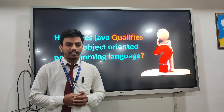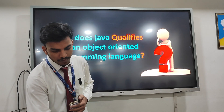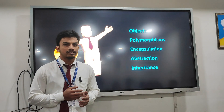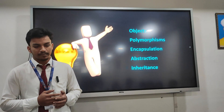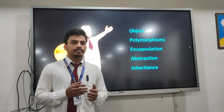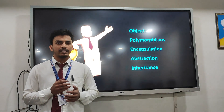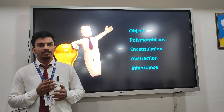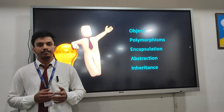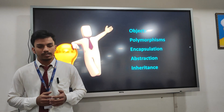How does Java qualify as an object-oriented programming language? Java supports the concepts of classes, objects, polymorphism, encapsulation, abstraction, and inheritance. If there is a confusion that Java is not a pure object-oriented programming language, there must be something lacking. Some concept may be missing, or some extra concept introduced by Java creates confusion among people that it is not a pure object-oriented programming language.